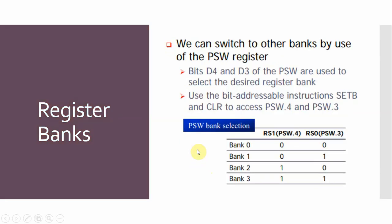We have the ability to switch to another bank by using the PSW — Program Status Word — register, as discussed in a previous lecture (link in the description). Bits D4 and D3 of the Program Status Word are used to select the desired register bank.